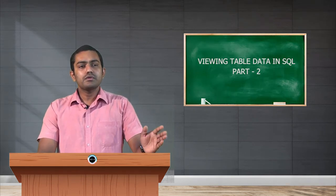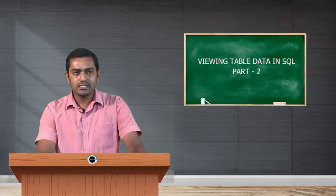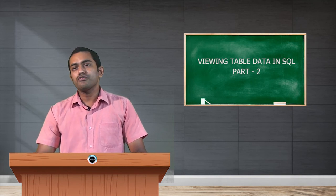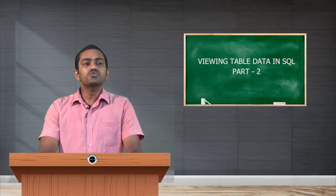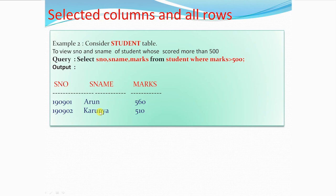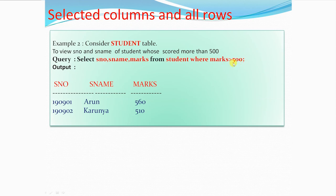One more example: to view student number and student name of students who scored more than 500 marks. This is a situation of selected rows and selected columns. The query is: SELECT student_number, student_name, marks FROM student WHERE marks > 500. This example shows we can use relational operators — greater than, less than, not equal to, equal to — any condition after the WHERE clause.